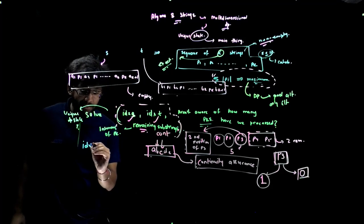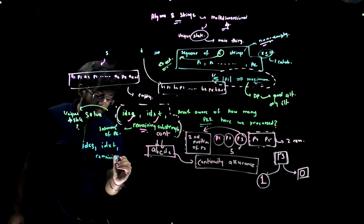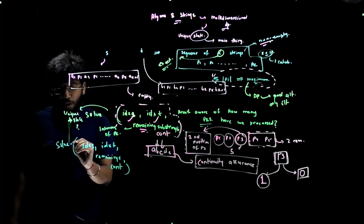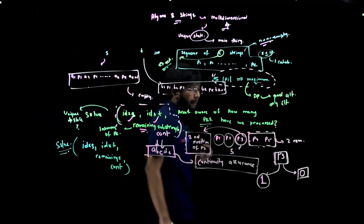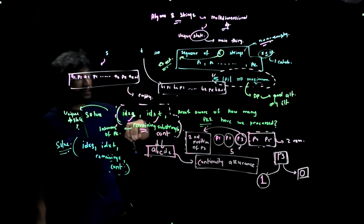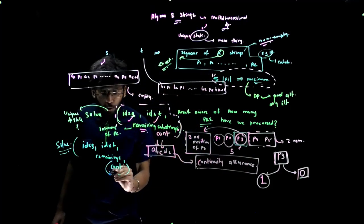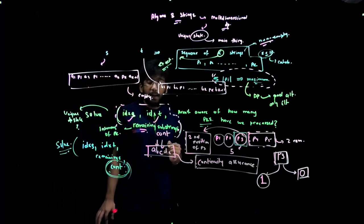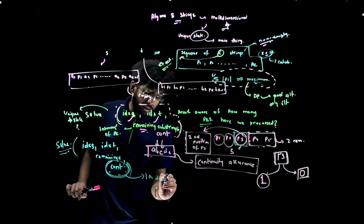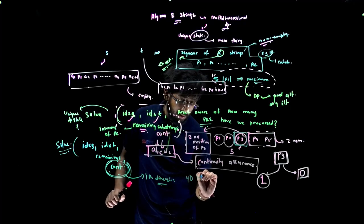If I have something like idx_s, idx_t, remaining substrings, and continuity as my DP state, then it would surely be unique. Because at each DP state, I want to know whether I need to continue that previous substring or not. That's why we require something like a continuity in our DP state. And therefore, this is the fourth dimension in our DP state. This makes it to be a 4D DP state.